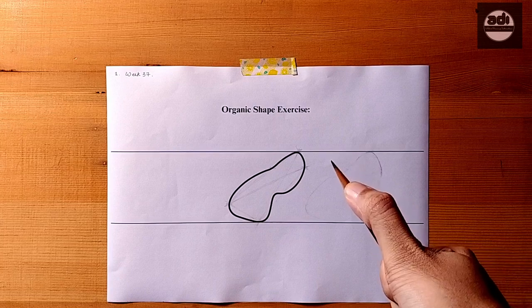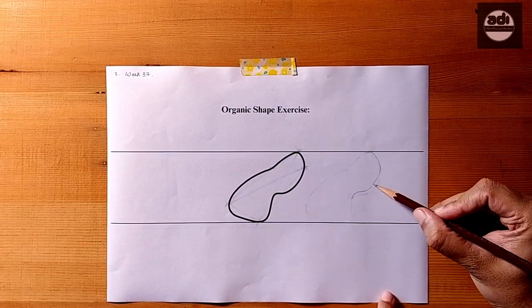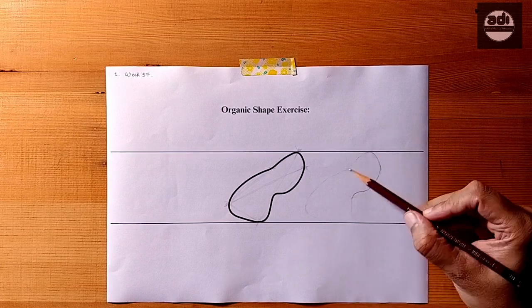Once we have all these points through triangulation, we now have a rough straight line shape representing the organic shape. We then need to round off the corners.